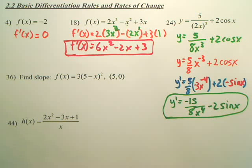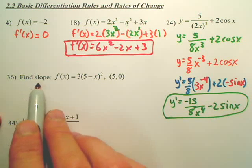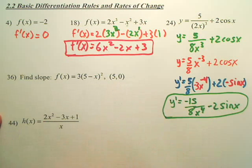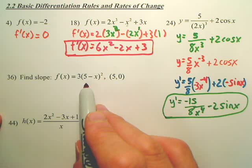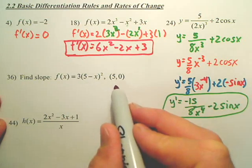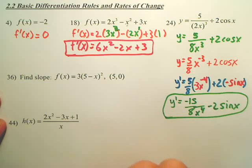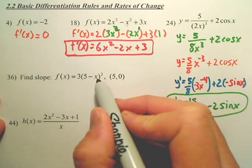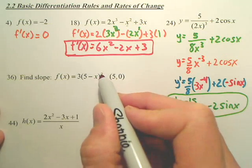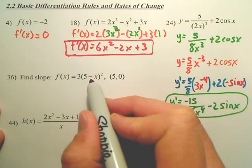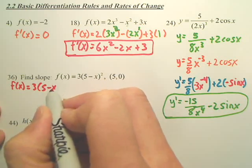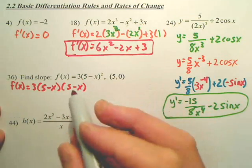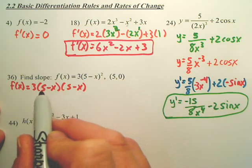Problem 36: find the slope at the point (5, 0). That coordinate tells us plugging 5 into the function gives output 0. To find the slope at that point, we first need the derivative. Since we have a binomial raised to a power, we don't yet know how to handle that directly, so we have to foil it out first.